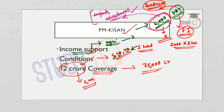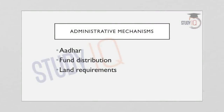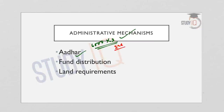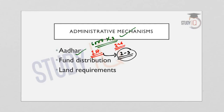Coming to the administrative mechanisms involved in PM Kisan: first is the Aadhaar requirement. From the second installment onwards, it is mandatory that the beneficiary must have an Aadhaar identification. However, this is not compulsory for the first installment, as the government announced that the first installment would be provided within two to three months. Alternative identification documents have been provided to beneficiaries for the first installment.